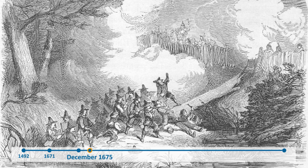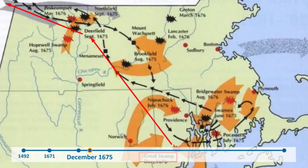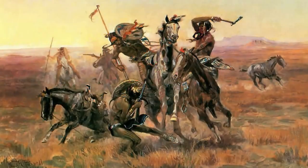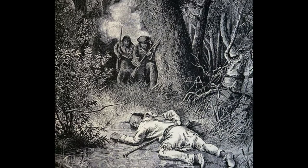Metacom, suffering from heavy losses, retreated to the east coast of New York. There, he attempted to enlist help from the Mohawk people. However, the tribe refused and launched a surprise attack against the Wampanoag Indians. This was a crippling blow to Metacom and would prove to be the turning point of the war.